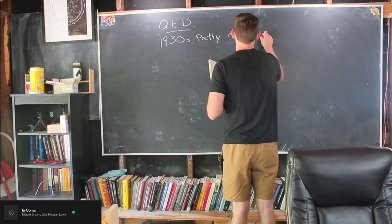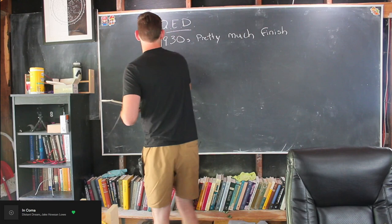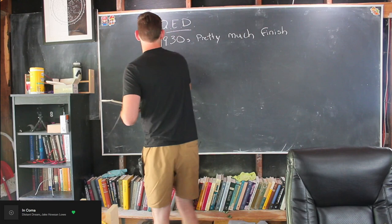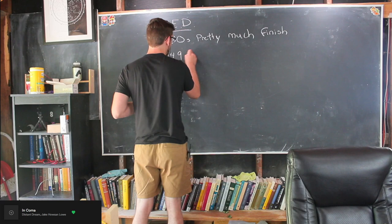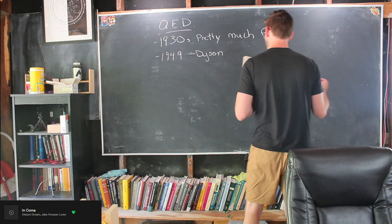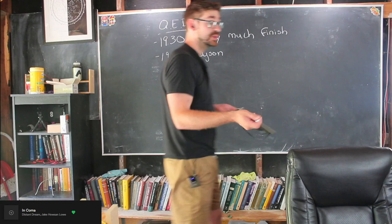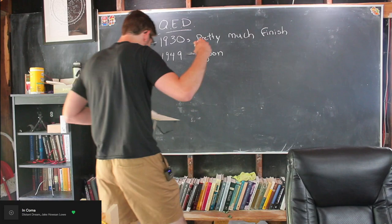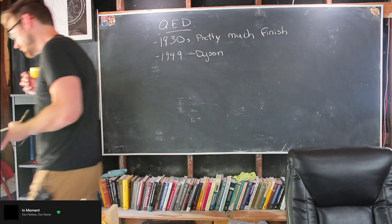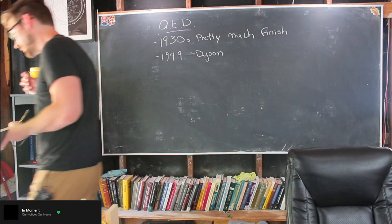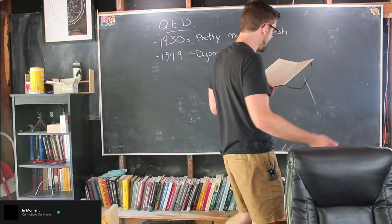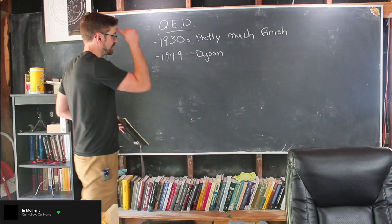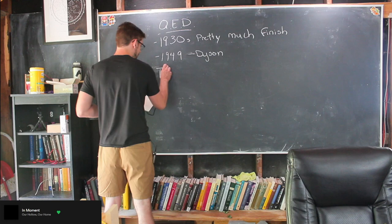Freeman Dyson connected Feynman's work and Schwinger's work, Tomonaga, and really laid down the first steps of a renormalizable theory. So in the 1930s it was pretty much finished but it wouldn't be highly usable until the late 1940s when it would be kind of done. I think it was late 1949 Dyson kind of finished it off. Even with the 30s there was great things being done like Dirac's theory of the electron, relativistic theory of the electron which included the positron.